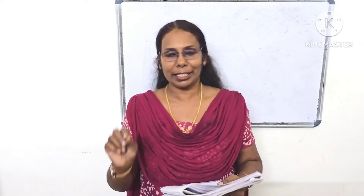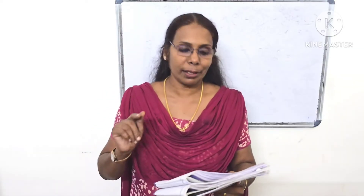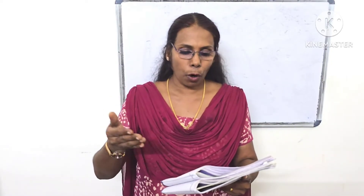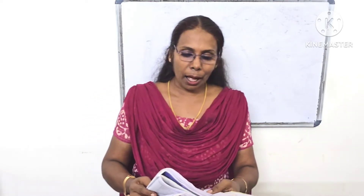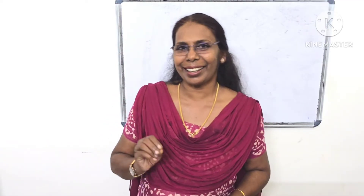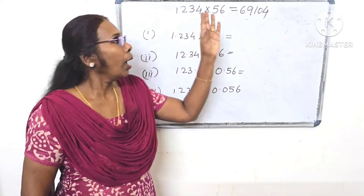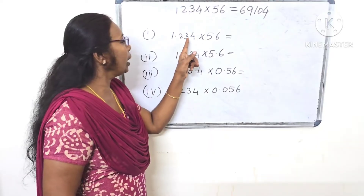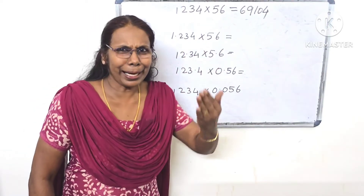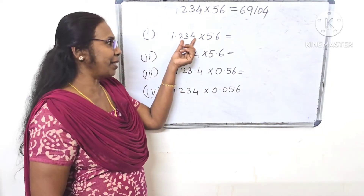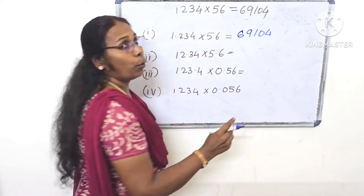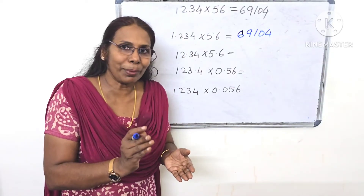Now let's take a look at page number 76. Since we have 3, about 1,000, we can end up 3. That's all.